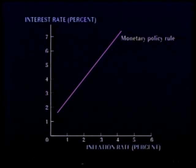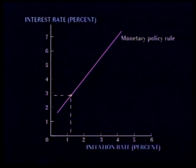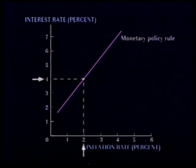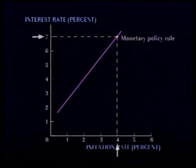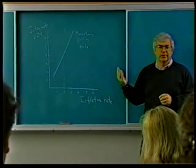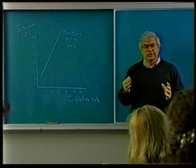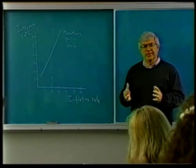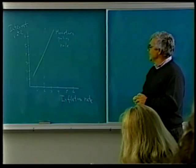This predictable response by the central bank can be illustrated graphically. You can see, for example, that if the inflation rate is 2%, the interest rate is 4%. If inflation rises to 4%, the central bank adjusts the interest rate to 7%. This is a monetary policy rule that describes the behavior of the Fed. Inflation is not the only thing that determines what the Fed will do, but it's a very big factor because the Fed has a responsibility for controlling the inflation rate.